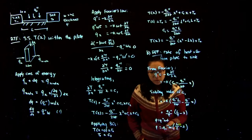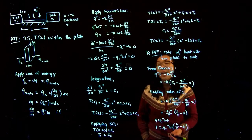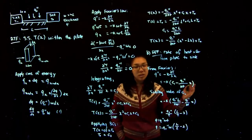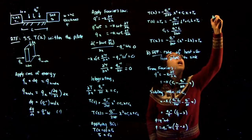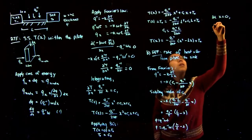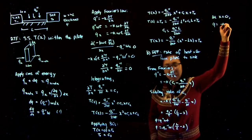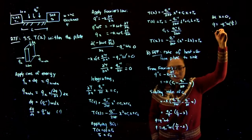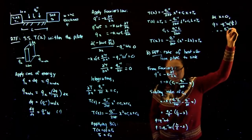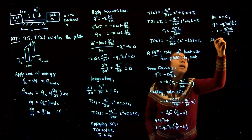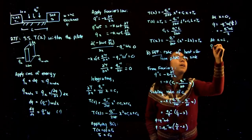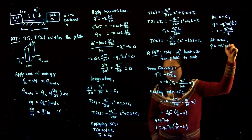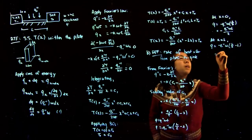The last thing we have to do is substitute the values x equals 0 and x equals L, since we've essentially solved the generic equation for the flux at any point within this plate. At x equals 0, Q equals minus Q0 times W times L/2, which gives minus Q0WL/2. At x equals L, Q equals minus Q0 times W times (L/2 minus L), giving essentially the same magnitude but a positive value.